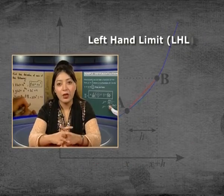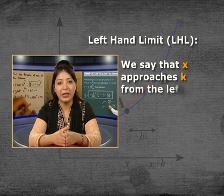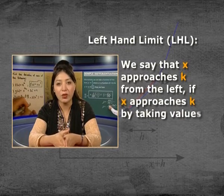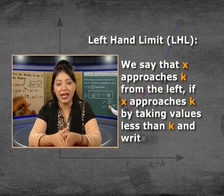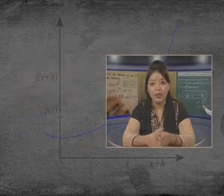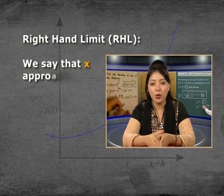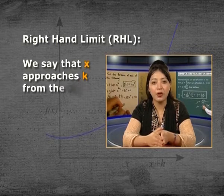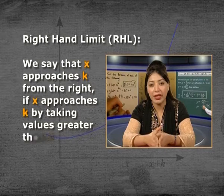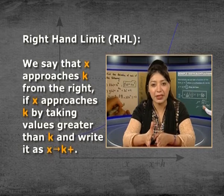Left hand limit: we say that x approaches k from the left if x approaches k by taking values less than k, and we write it as x→k⁻. Right hand limit: we say that x approaches k from the right if x approaches k by taking values greater than k, and write it as x→k⁺.